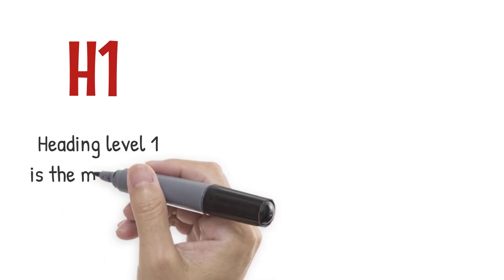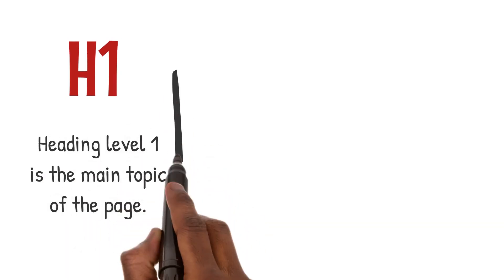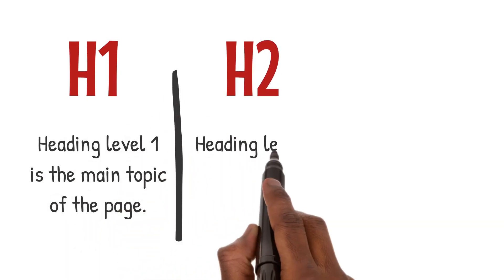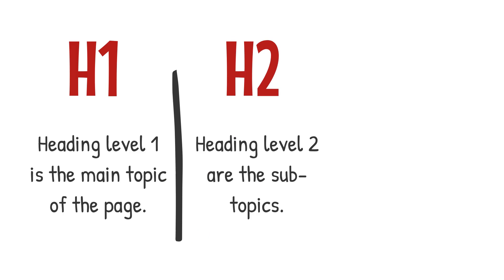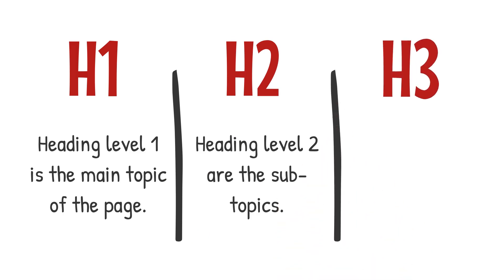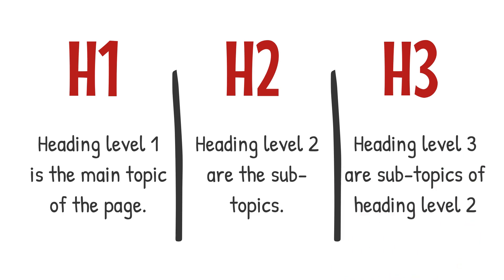Heading Level 1 is the main topic of the page. Heading Level 2 are subtopics, and you can have many subtopics on each page. Heading Level 3 are subtopics of Heading Level 2 — I guess you could say they are sub-subtopics.